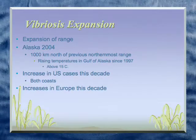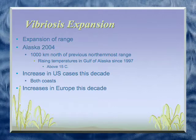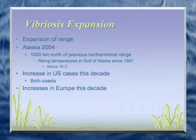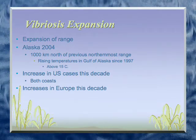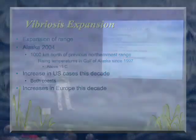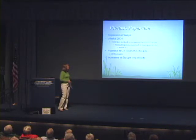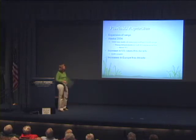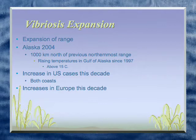Vibrio is another pathogen where we have seen an expansion, and this one definitely affects humans — not just ecologically but in a health sense. It had never been seen in Alaska before 2004; previously the northernmost range was British Columbia. We've been seeing a warming trend in the Gulf of Alaska for about the past 15 years, and in the areas where shellfish caused problems, water temperatures never went below 15 degrees centigrade that year. We've also seen an increase in Vibrio cases on both coasts and in Europe in the past decade.